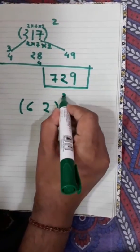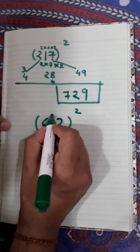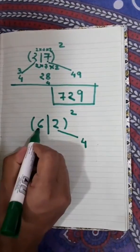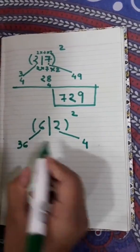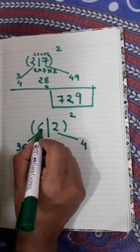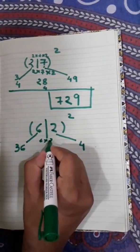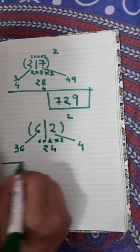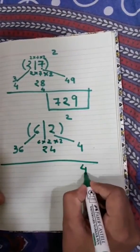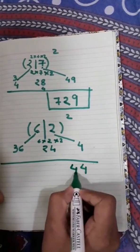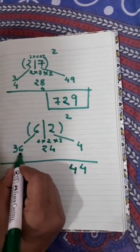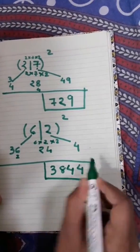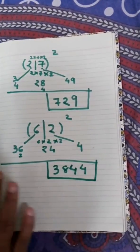Now for 62²: divide into two parts — last digit square is 2² = 4, first digit square is 6² = 36. In between, multiply 6 × 2 × 2 = 24. Write 4, carry forward 2. Then 36 + 2 = 38, giving 3844 as the square of 62. In this way you can find the square of any number.